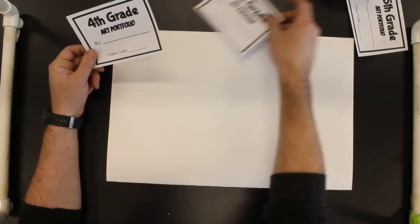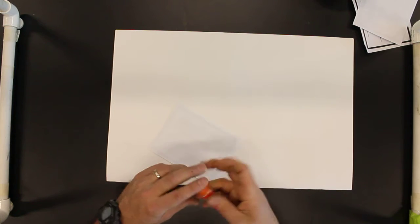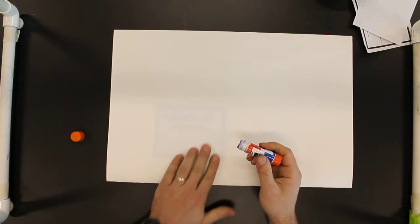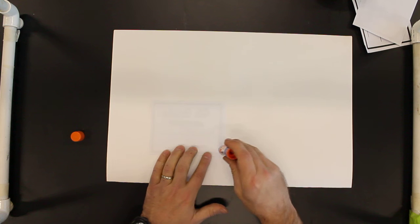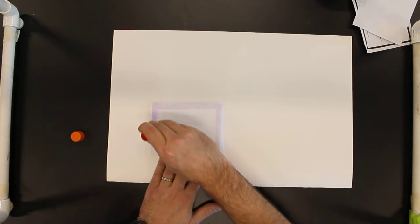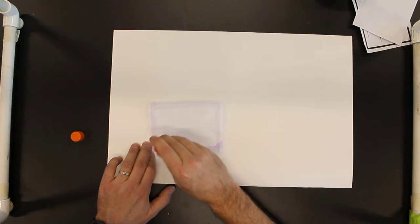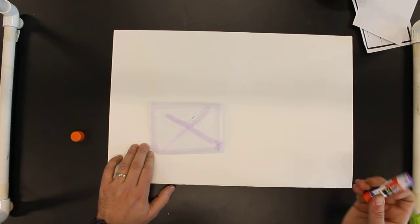What you're going to do is take a glue stick, and when you glue it down, you're going to glue right on the edges. Very important that you do that - take your time, slow down. And then I like to do an X in the middle just to give it a little bit more glue.